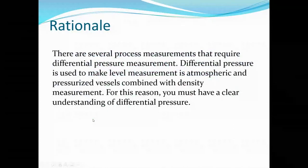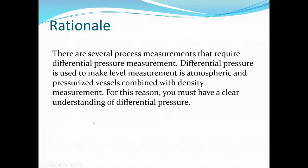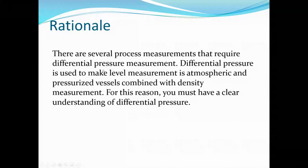The rationale for this ILM is that differential pressure level transmitters are used widely in industry as level measuring devices, so we spend a whole ILM on them. Aside from regular level measurements, they can also measure density — all based on the P=ρgh formula. Several process measurements require differential pressure: it's used for level measurements at atmospheric pressures, in pressurized vessels, and for density measurements.